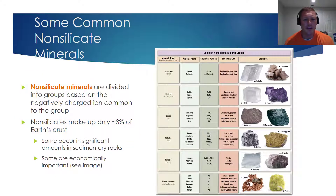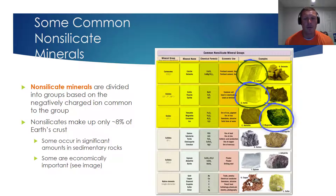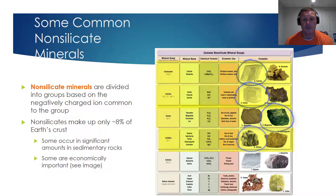You probably have some familiarity with a lot of these minerals. For the carbonates, we've looked at a calcium sample. For the halides, we've looked at halide on more than one occasion in previous vodcasts. As an example of an oxide, I showed you a sample of magnetite, which has the cool property of being highly magnetic. For the sulfides mineral group, I showed you a sample of galena. There are also two other non-silicate mineral groups: the sulfates and the native elements.